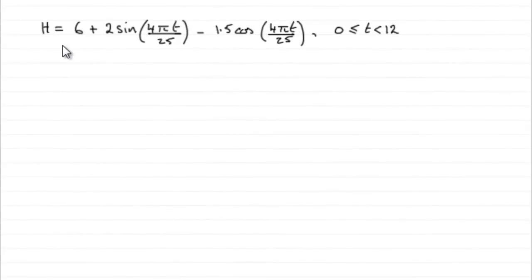Okay, for this part then, we're given that h equals this equation here, and we've got to find out the maximum value of h and the value of t that that occurs at.